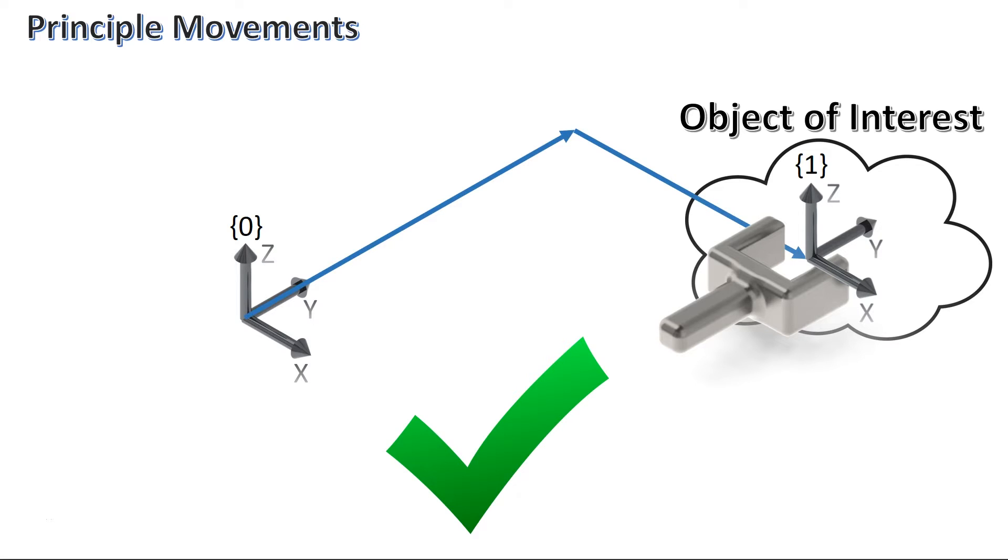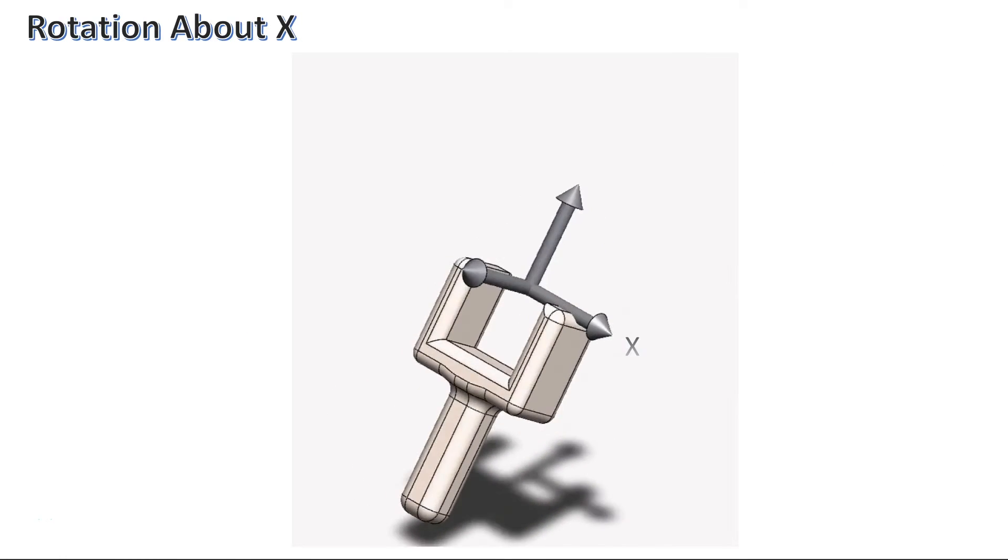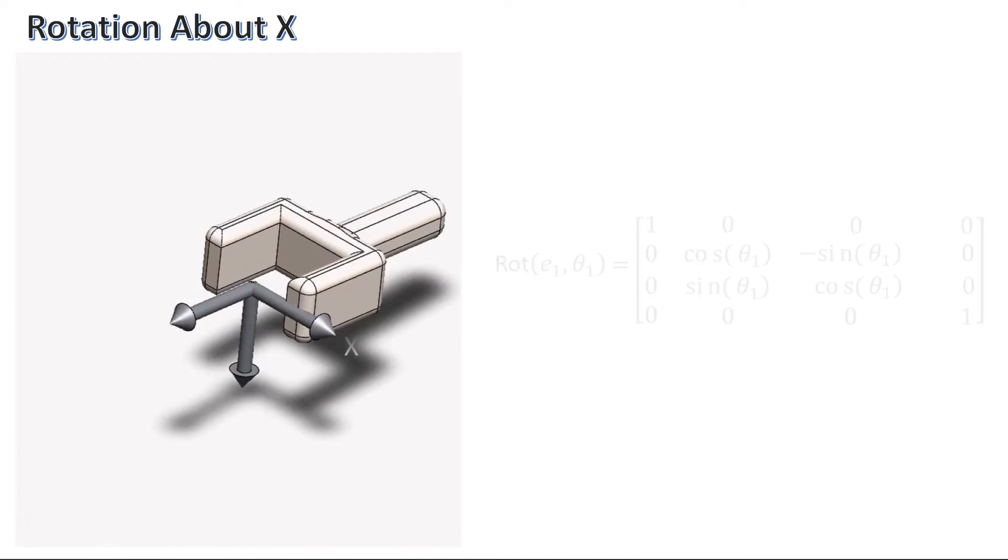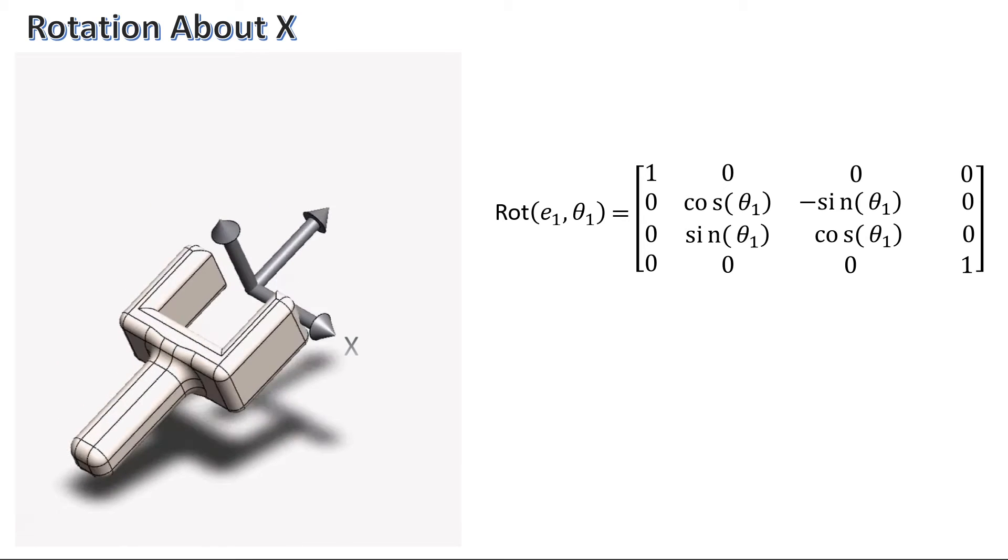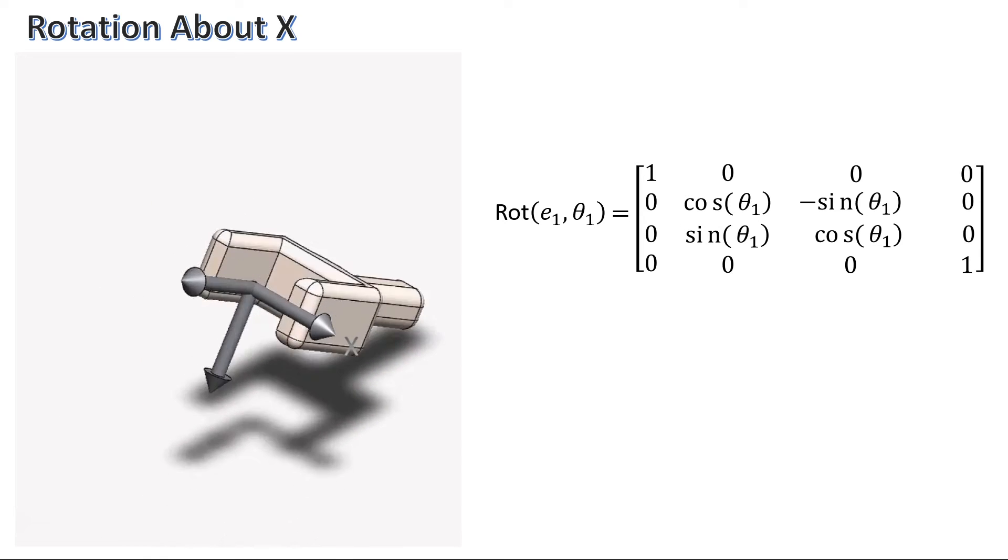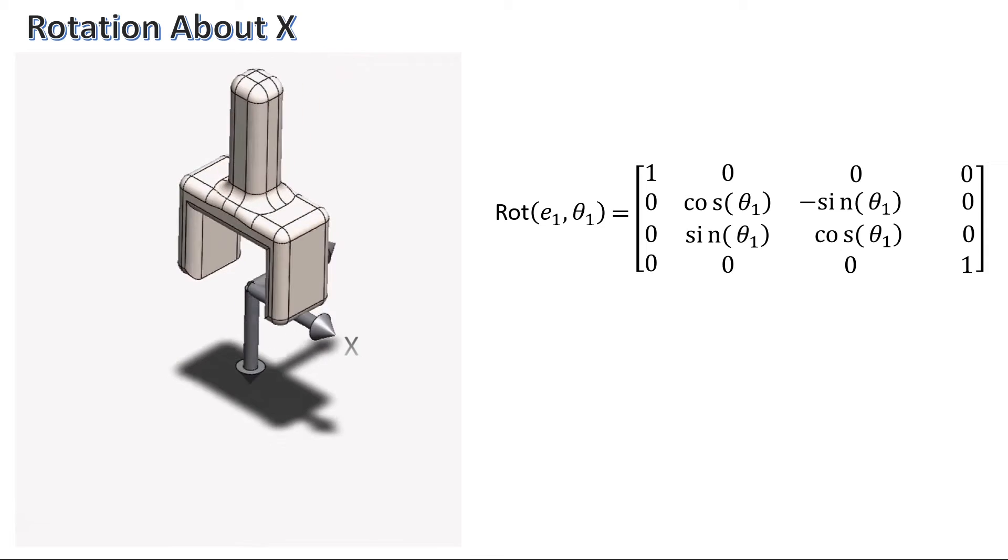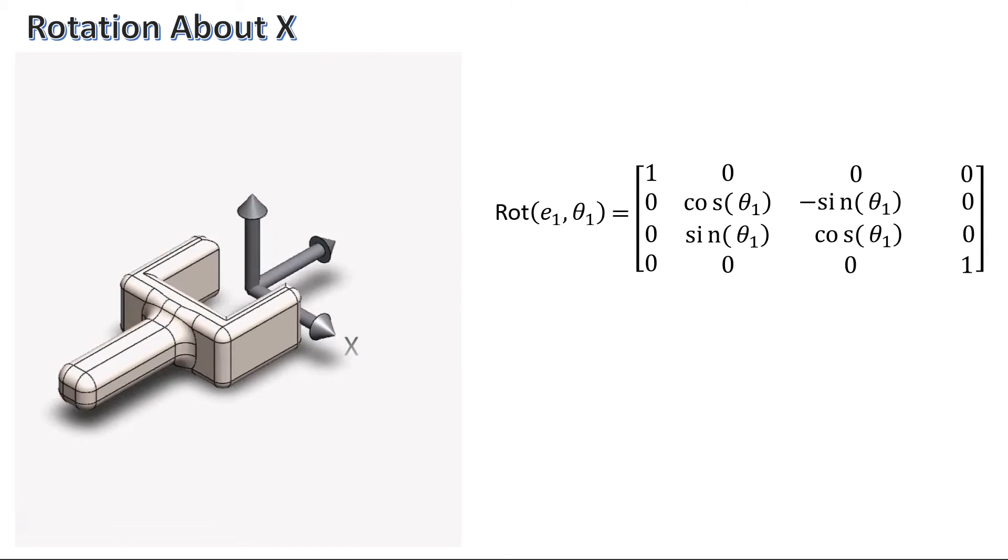Let's first start with rotation. Here's the transformation about an object's own x-axis. Take note that they're all zeros in the translation region, since this is just a pure rotation. When a transformation matrix has only rotation elements, it's sometimes referred to as a rotation matrix.